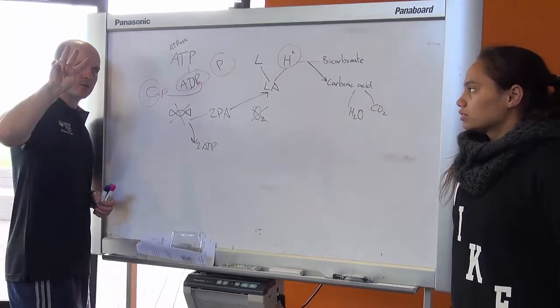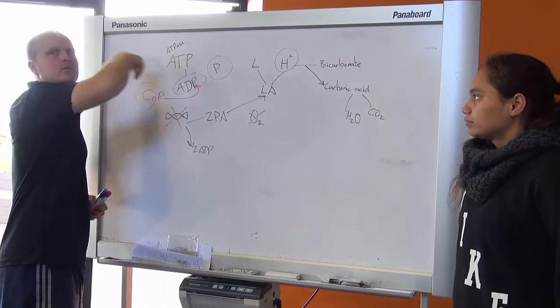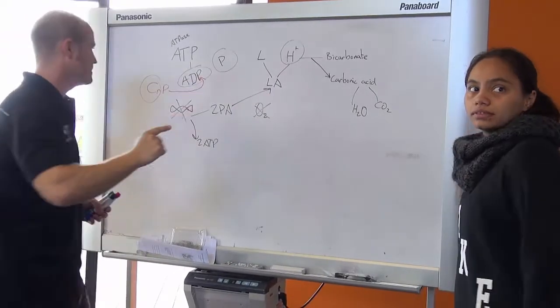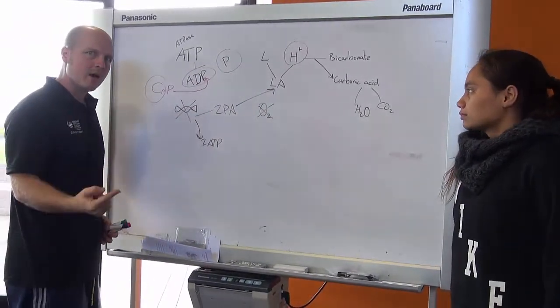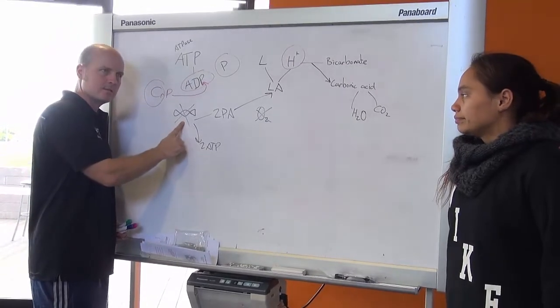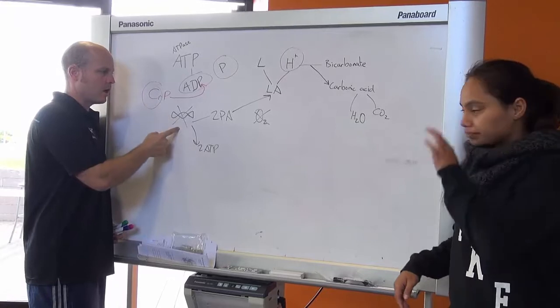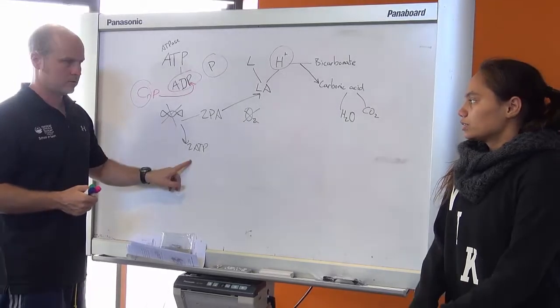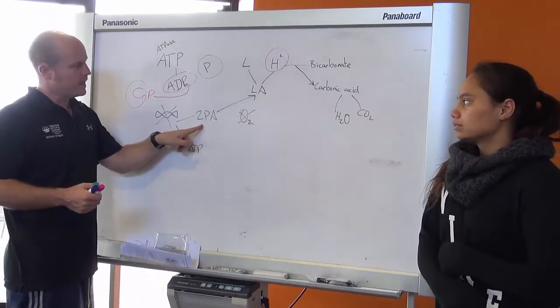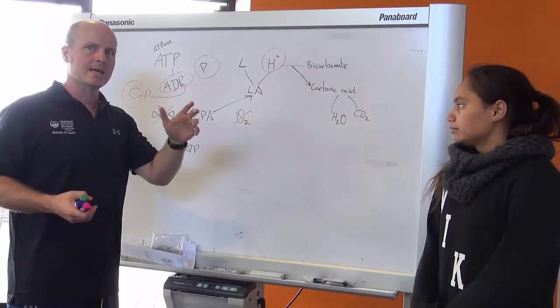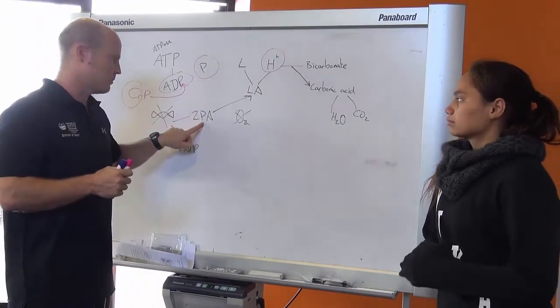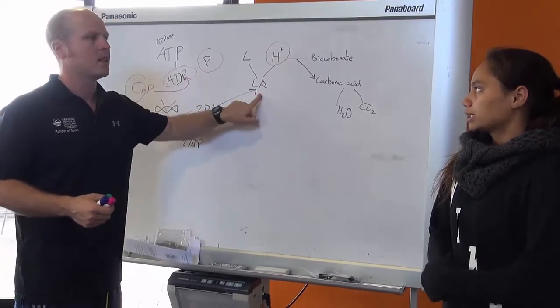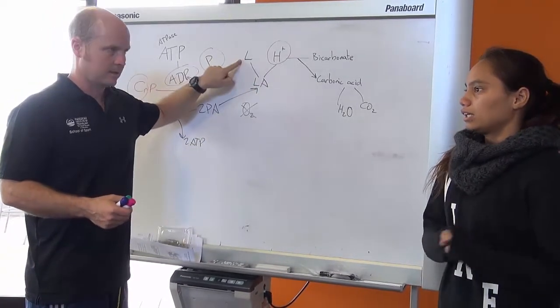So that's called glycolysis. Gly for glucose, lysis for to kill. So glycolysis gives us two ATP and two pyruvic acid. And then if we're doing high intensity exercise, we can't get enough oxygen to match the amount of pyruvic acid we create. So therefore, without oxygen, pyruvic acid turns into lactic acid, which then turns into lactate and hydrogen.